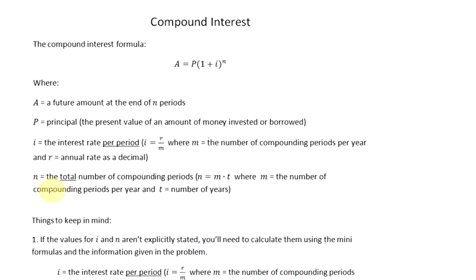N is equal to the total number of compounding periods. If you're given the value for N, you can use it as is in the formula. However, if you're not given a value for N, you need to calculate it using N = M times T, where M is the number of compounding periods per year and T is the number of years. We are going to explore that further in our second example.